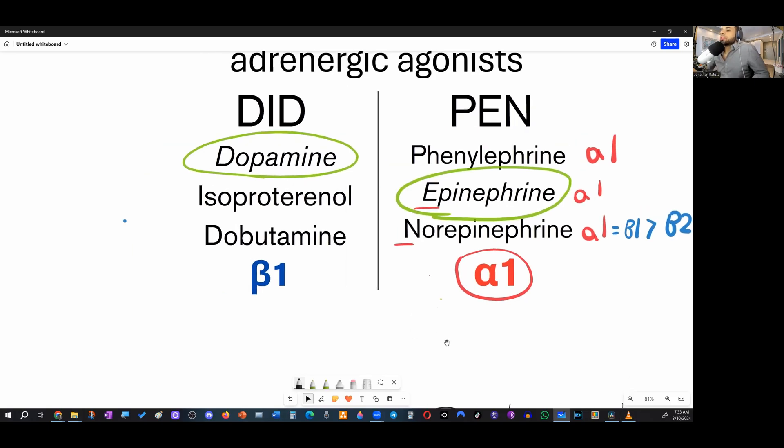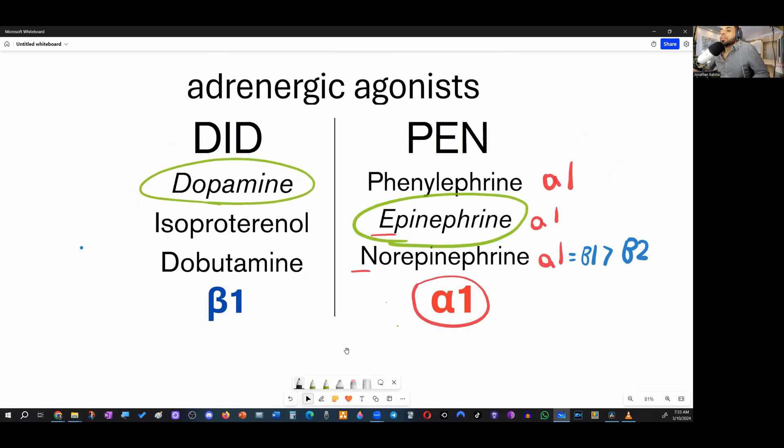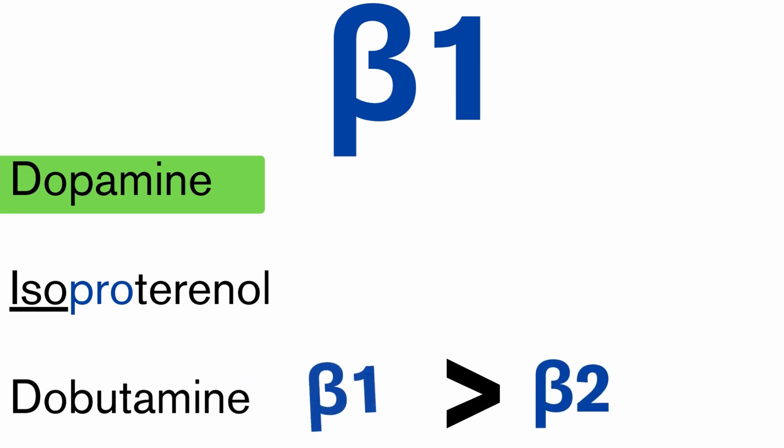Now we take a look at this side where it says did, they're favoring beta one. Dobutamine, beta one over beta two, has more affinity for beta one. Isoproterenol. Isoproterenol meaning the same. So I'm going to say beta one, the same way it has affinity for beta two. And then pro for proactive. So I'm going to say agonist. It's a non-selective beta agonist.